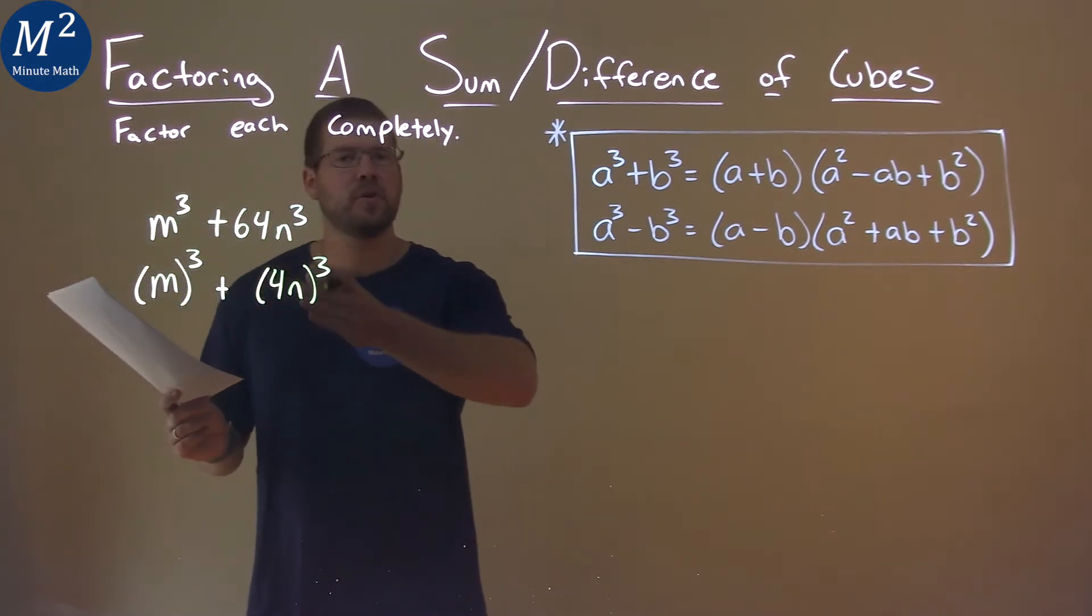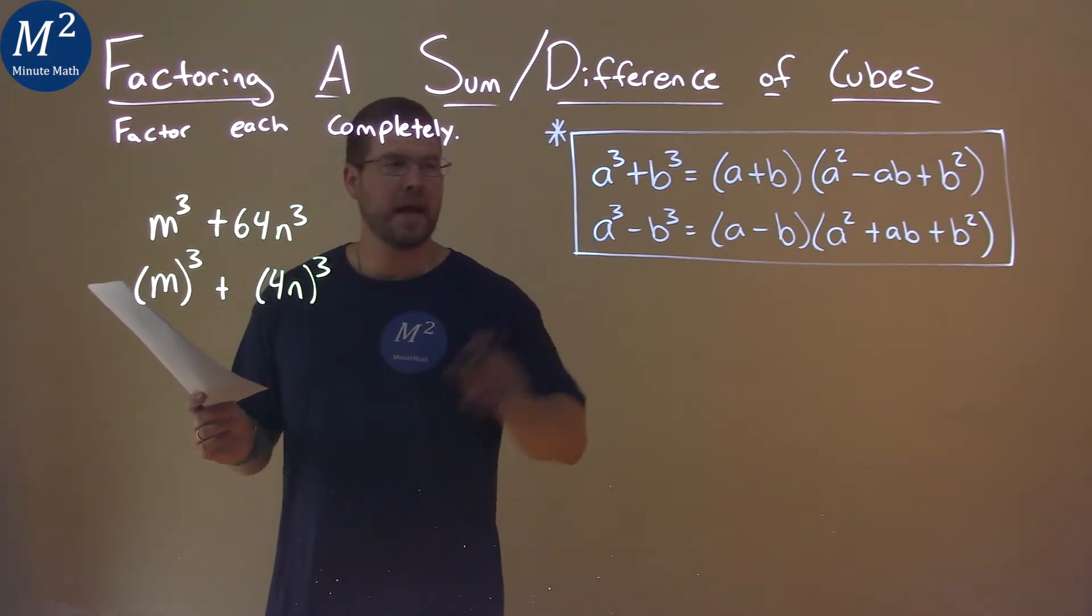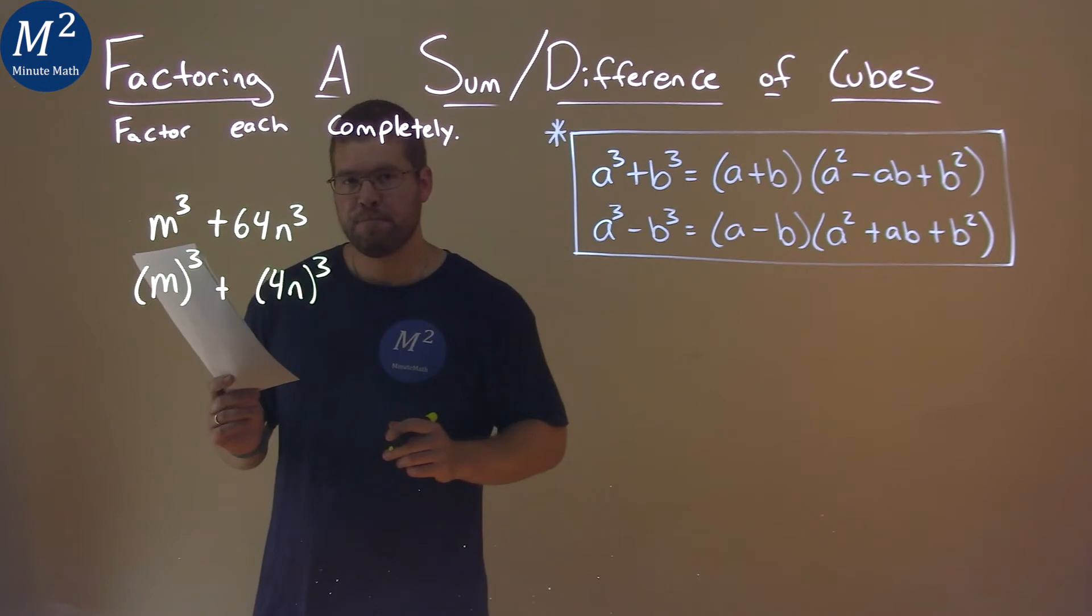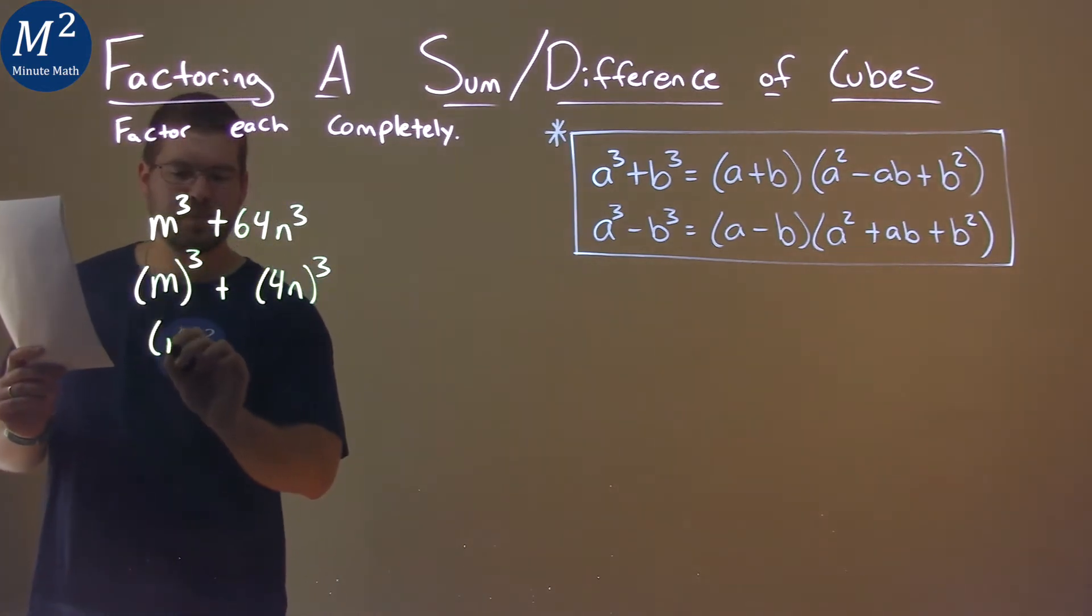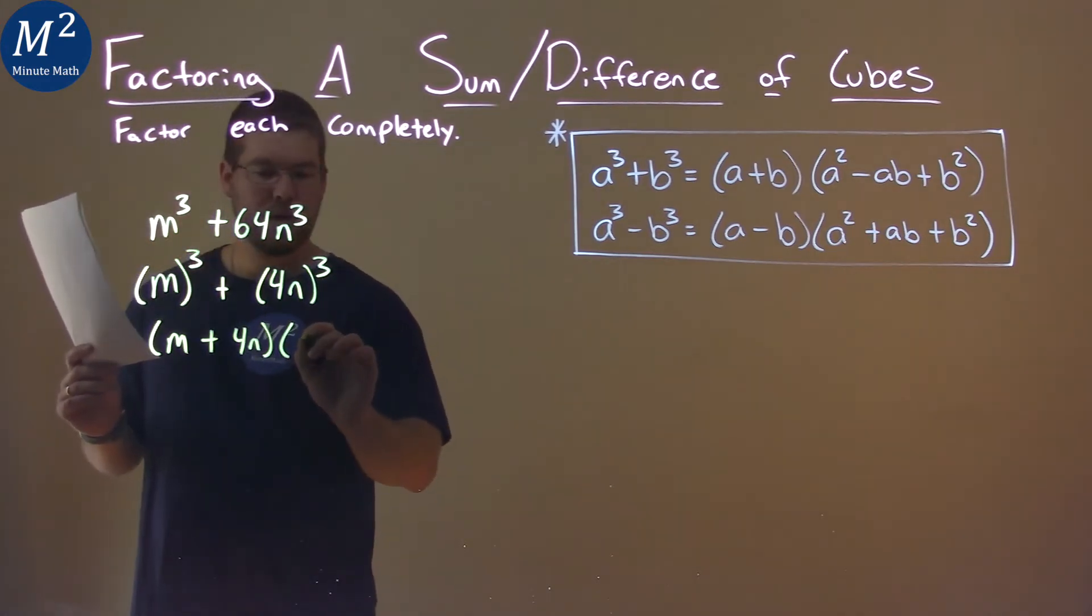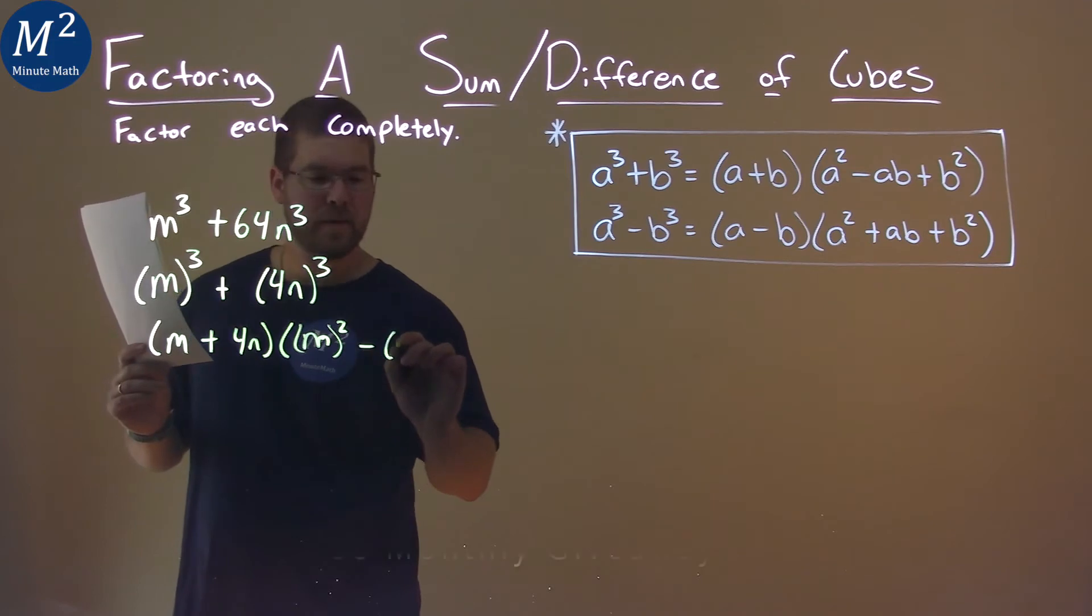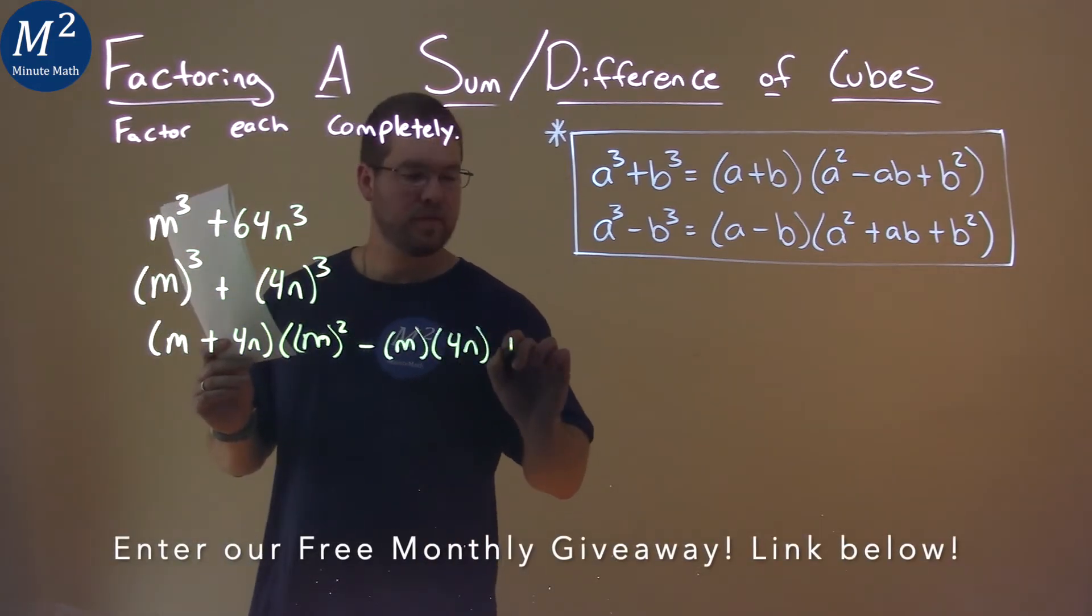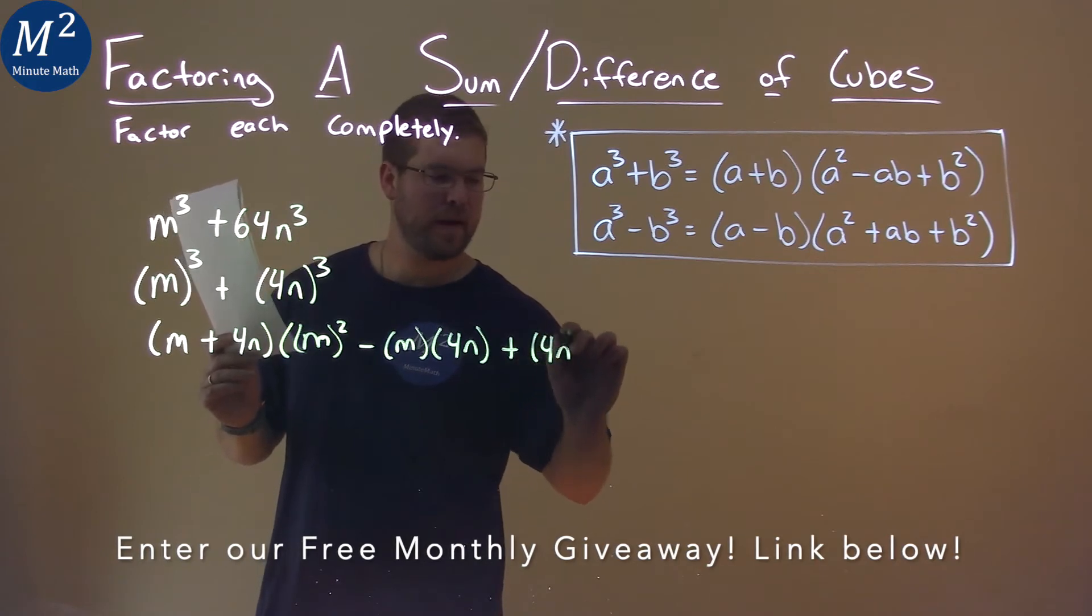We now have the sum of two cubes. We can use our formula. a will be our m value, and b will be 4n. Follow the formula: m plus 4n times m squared minus m times 4n plus 4n all squared.